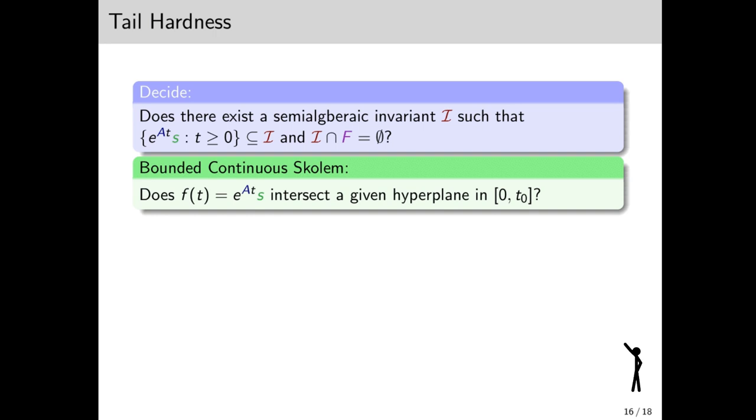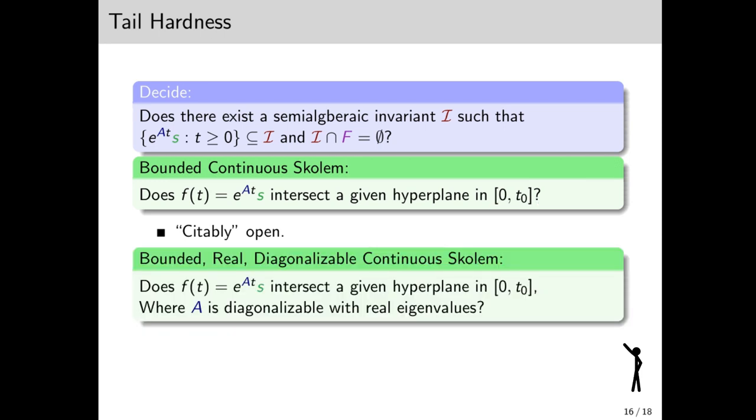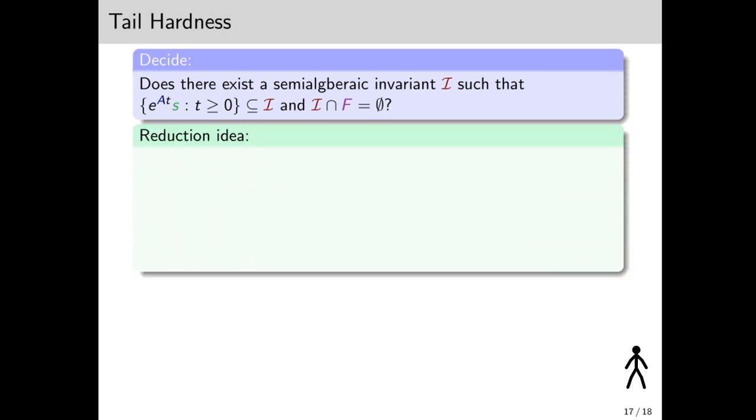Before describing this hard problem, I'll introduce the bounded continuous column problem, which is a famous problem whose decidability is open. It asks whether e to the a t s has a zero in a bounded interval. We don't quite have a reduction from its general form, but from a restricted one, in which a is diagonalizable with only real eigenvalues. This is also an open problem, but it hasn't been mentioned explicitly. However, there is good evidence that it is at the core hardness of the general case.